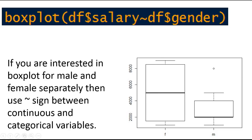You will get a plot for male and female separately. This is the boxplot for female — that is the distribution of salary among females. This is the distribution among salaries of males. There is more variation in the salaries of females as compared to males, and the female salary is more normally distributed. The median in the female salary lies almost in the middle of the data while the median in the male salary lies near to the first quartile.